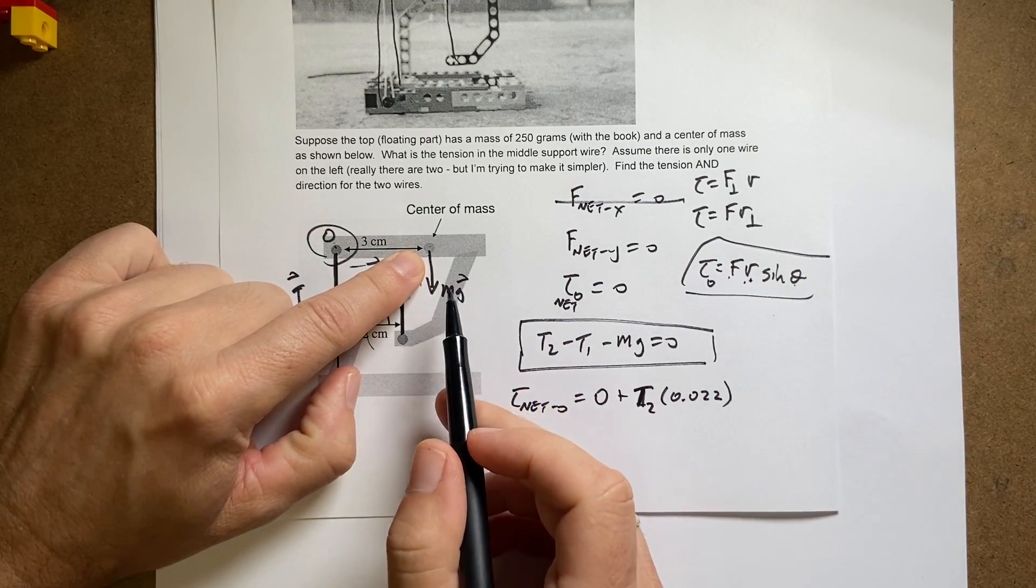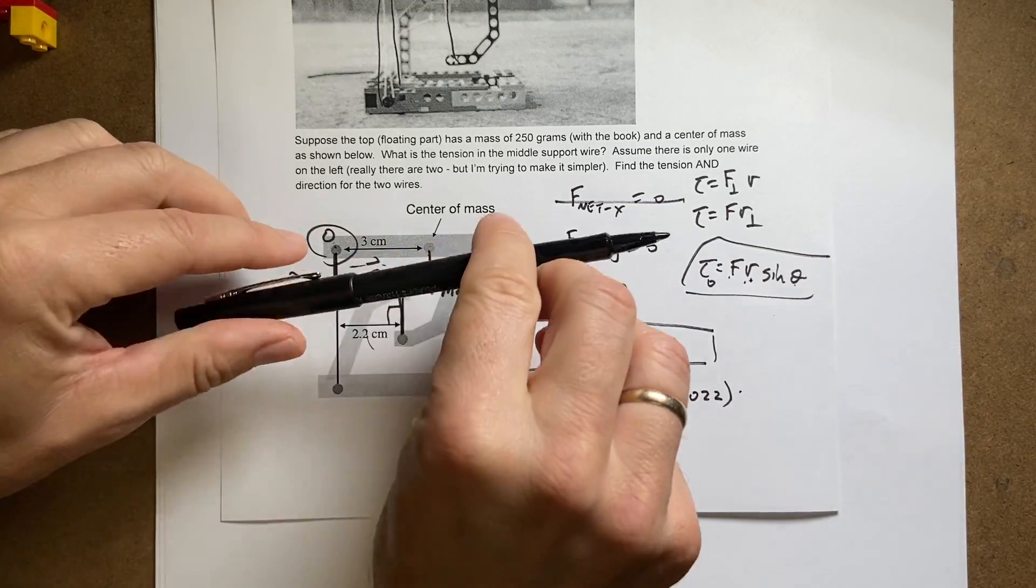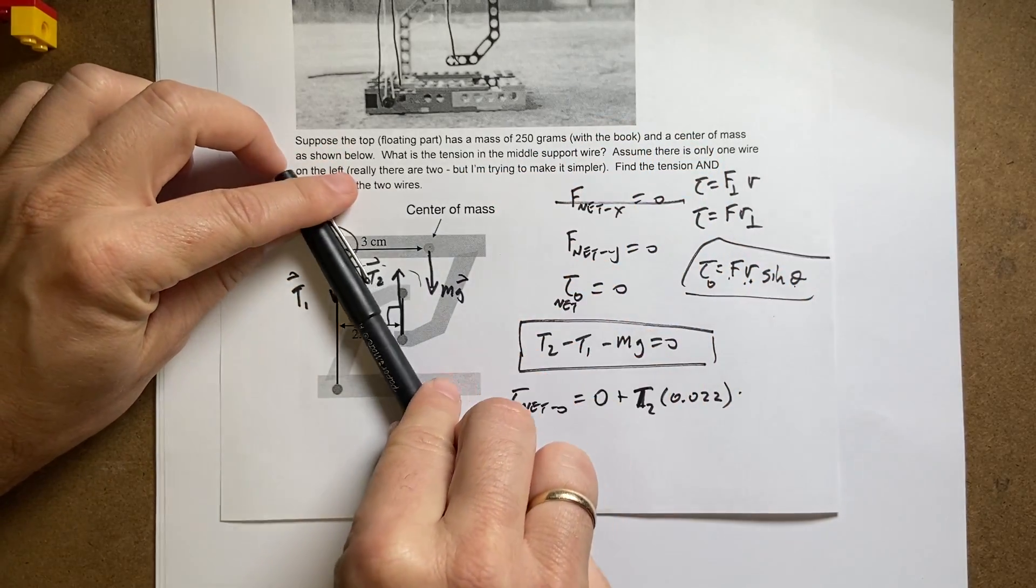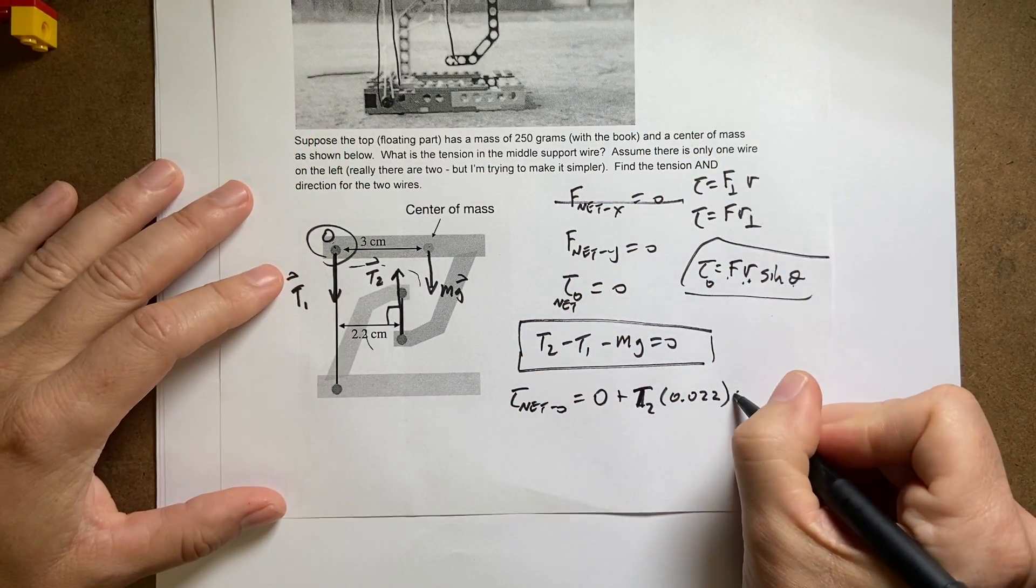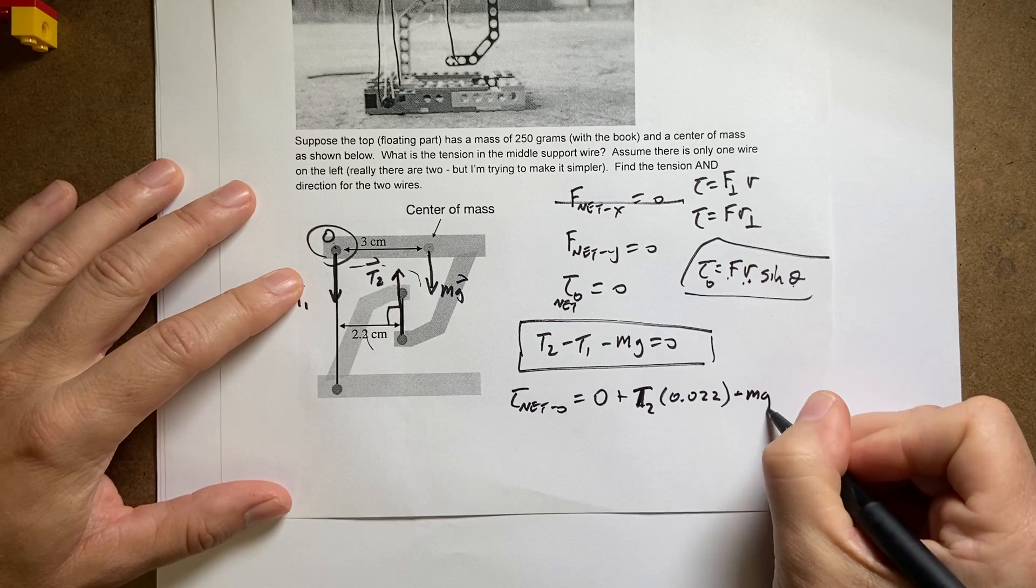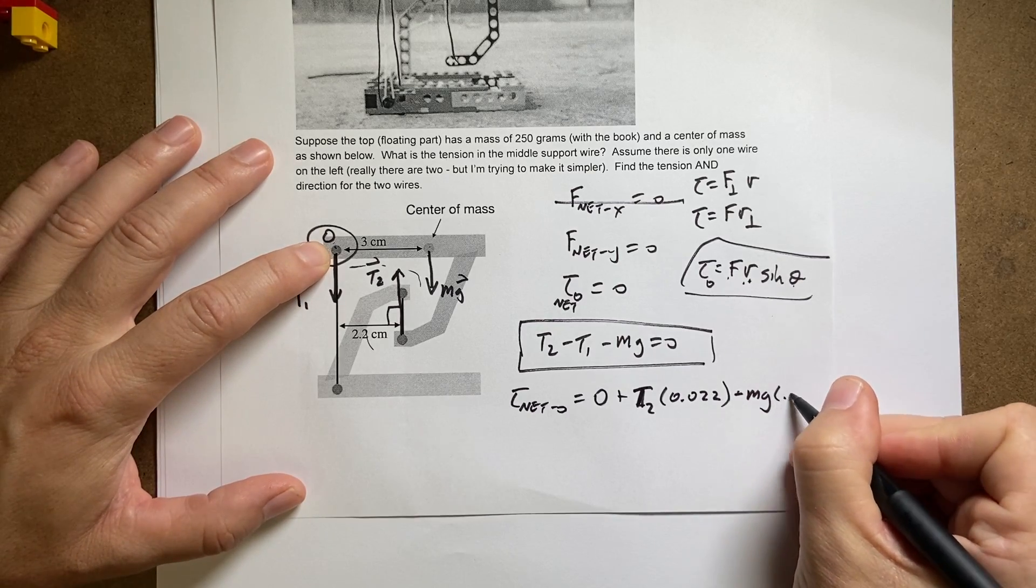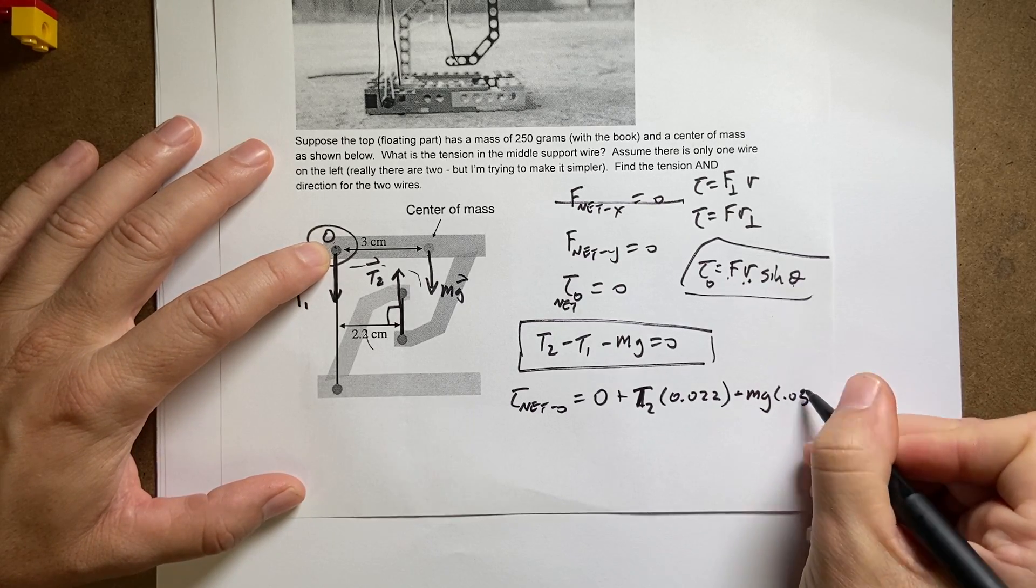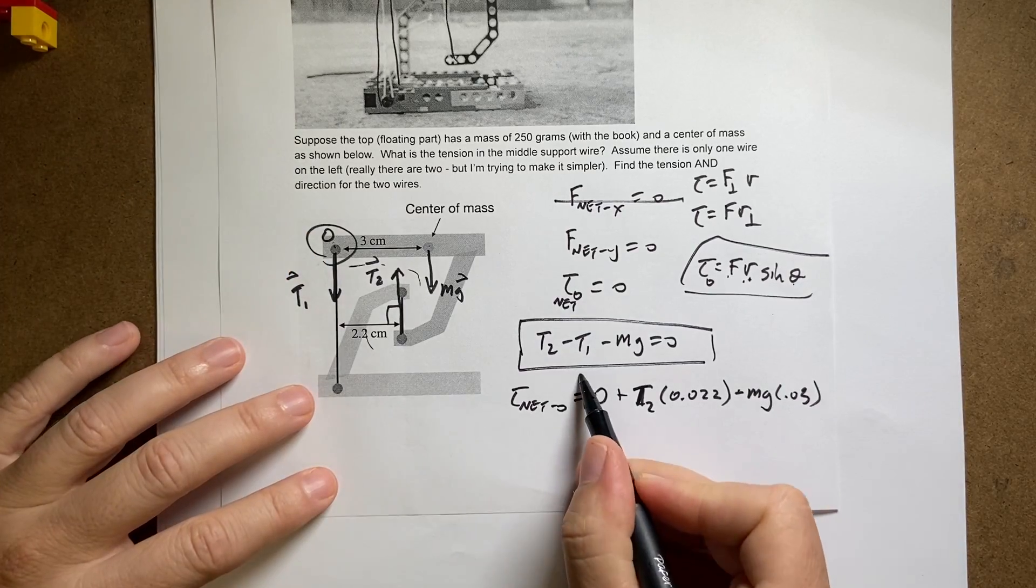And then I'm going to have the torque due to the gravitational force, which is going to be, that would make it rotate in the clockwise direction, which is negative, so it's going to be minus mg times 3 centimeters, 0.03. So here's another equation.